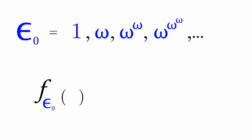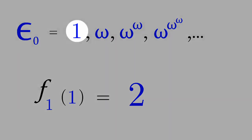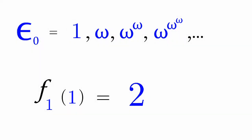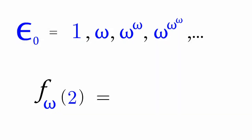So, f_epsilon_naught of 1 is equal to f_1 of 1, which is equal to 2. Because we have 1 as our input, we pick the first element of the counting sequence. Now, f_epsilon_naught of 2: you pick the second element of the counting sequence, which is omega. And this turns into f_2 of 2, which is equal to 8.